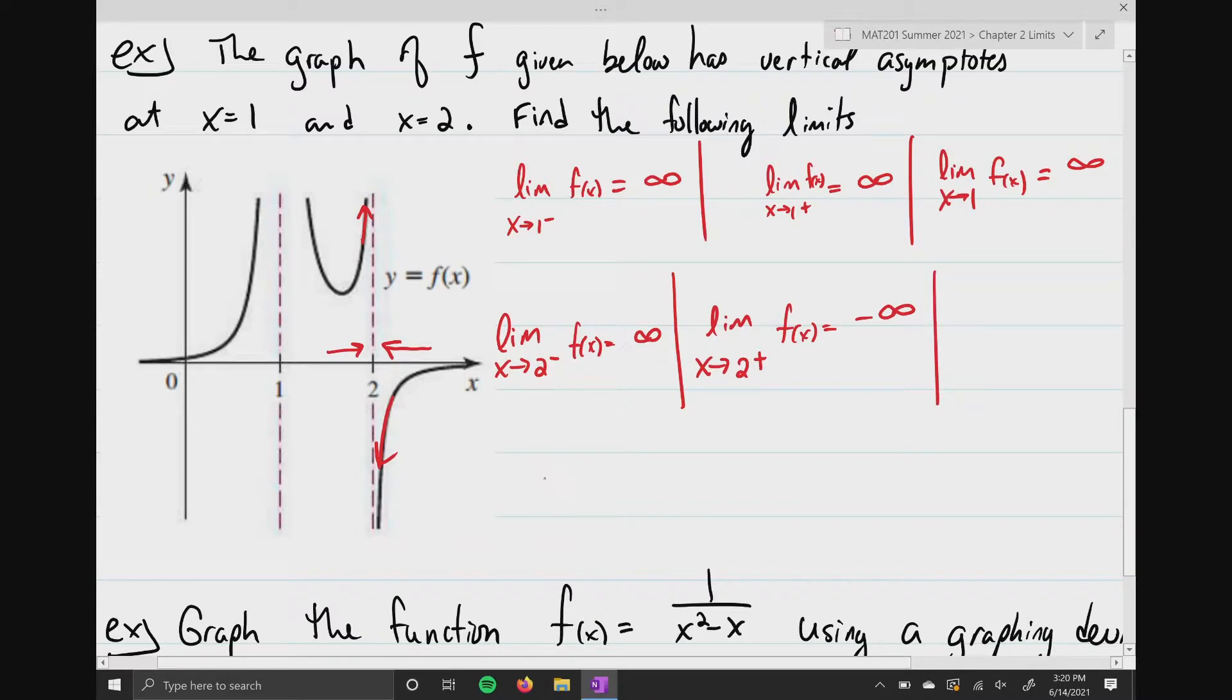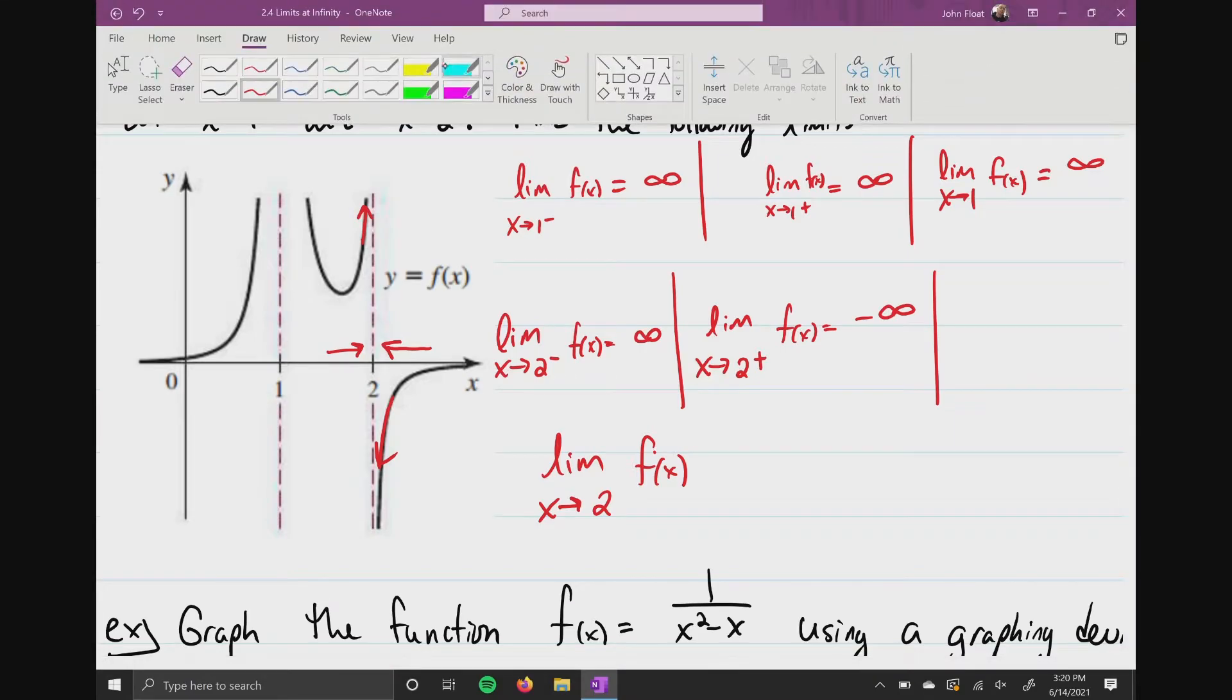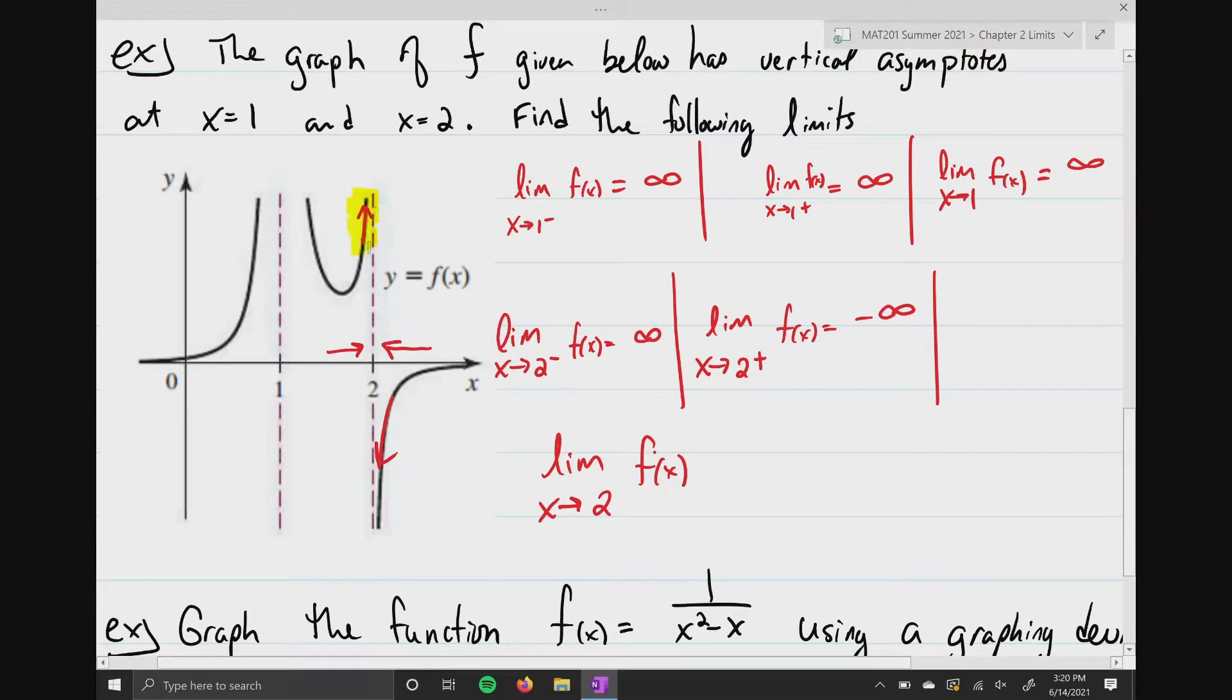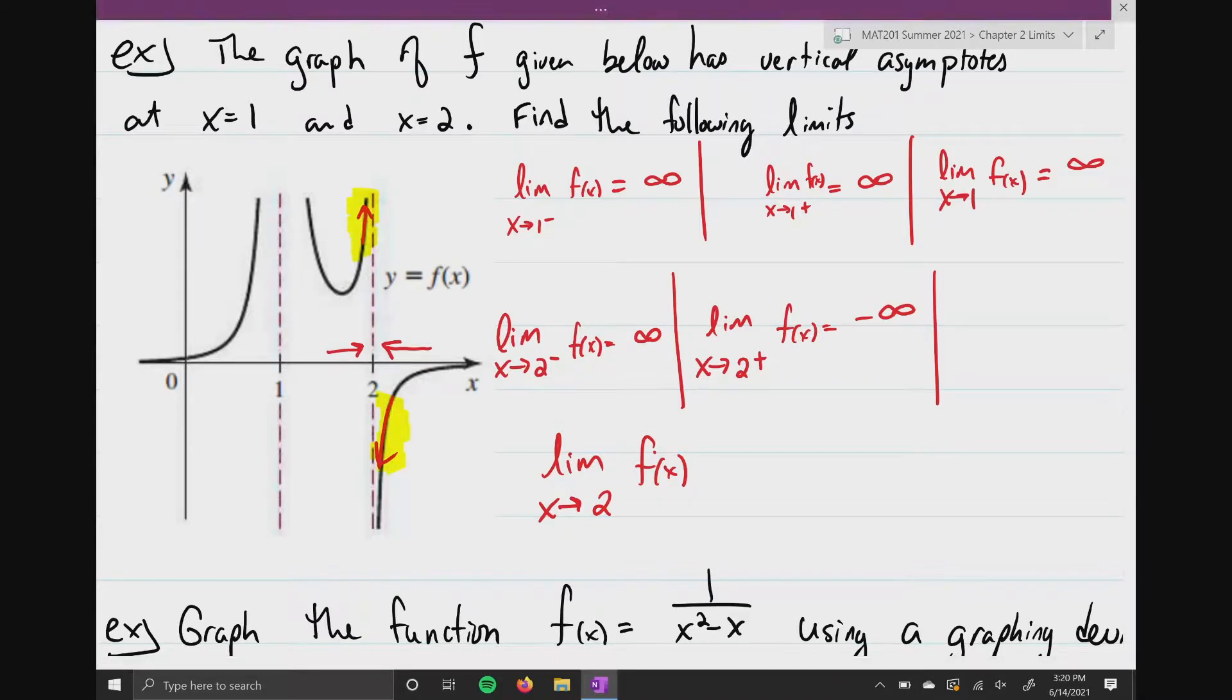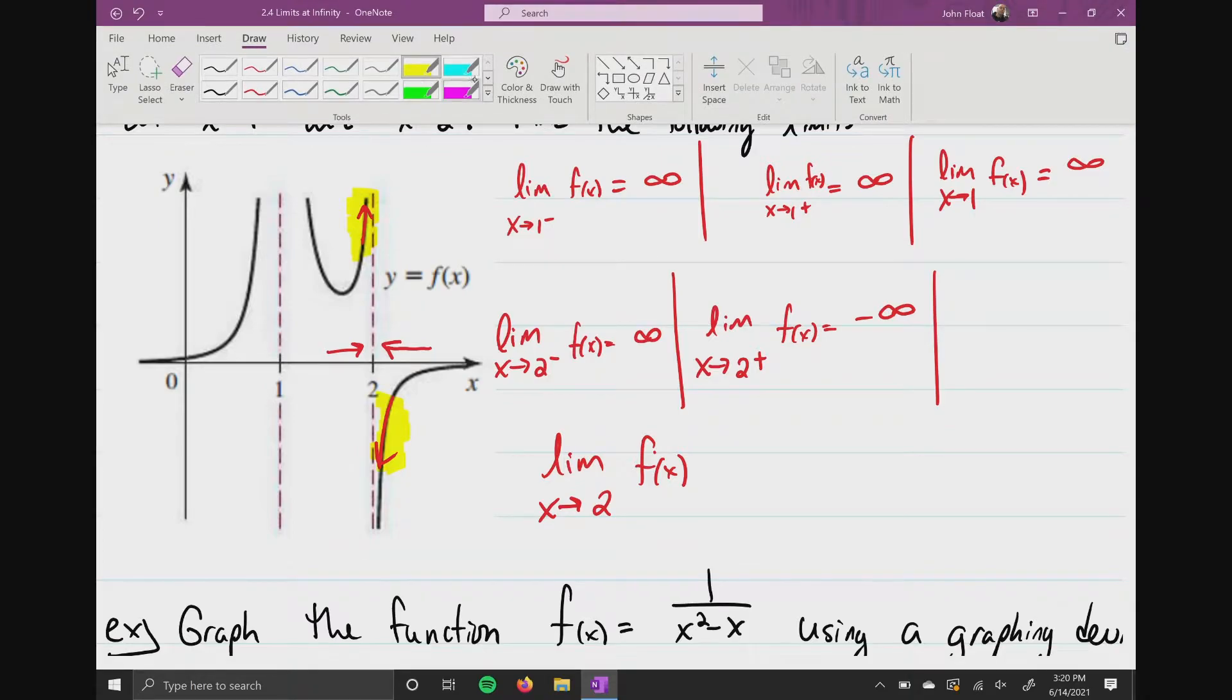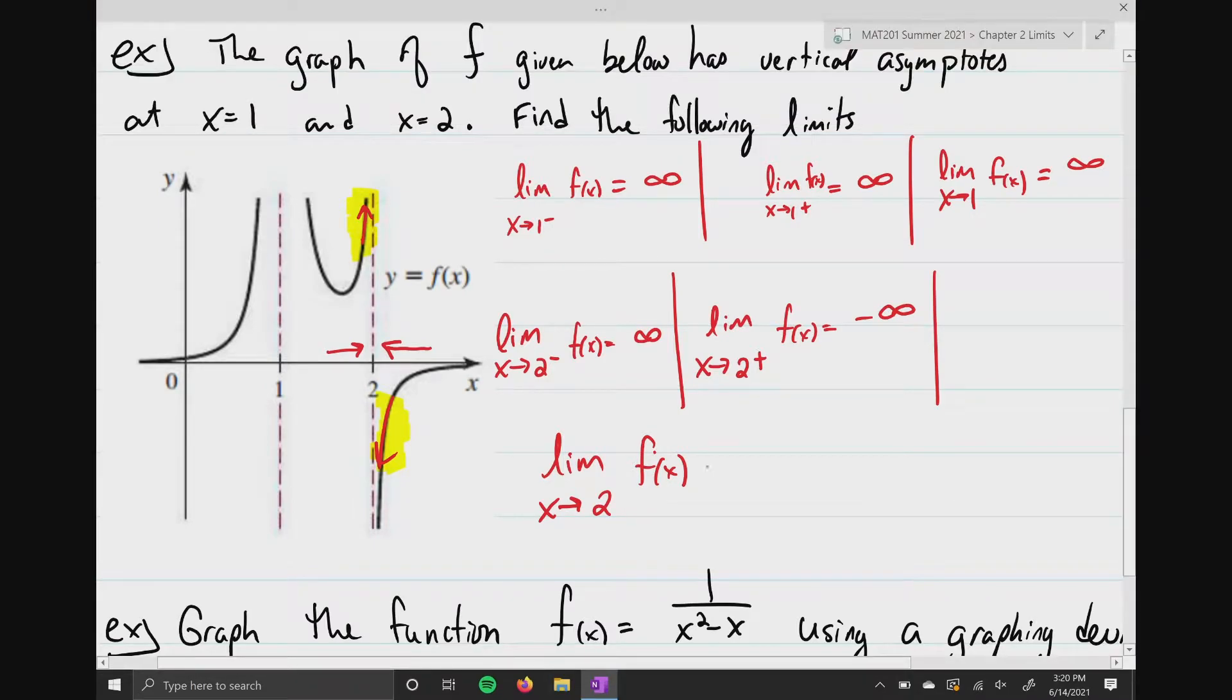Lastly, if I wanted to evaluate the limit as x approaches 2 of f of x, that means I'm approaching from both sides. Unfortunately, as we can see, that is approaching infinity if we approach on the left, and if we approach from the right, that's approaching negative infinity. Therefore, this limit does not exist.